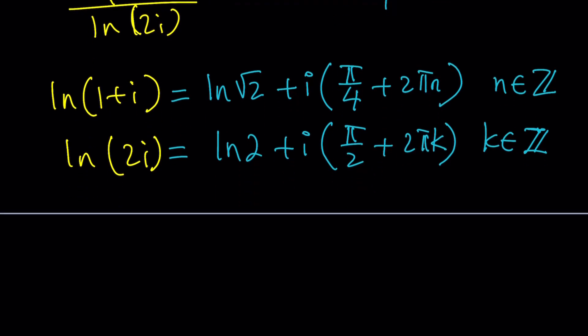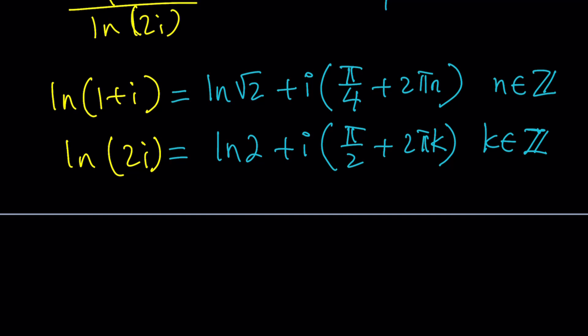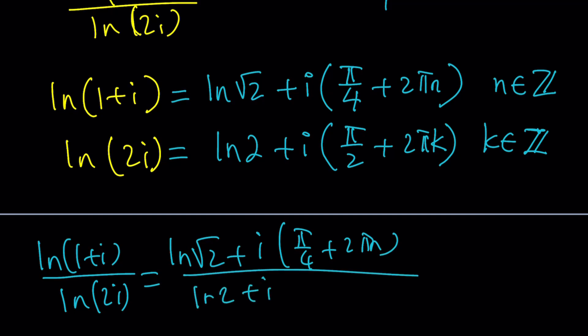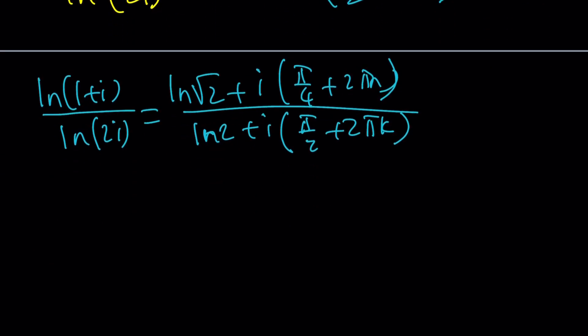Make sense? Because they are multi-valued, obviously, we kind of need to focus on the principal values. But anyways, let's go ahead and plug it in. And then our answer is going to be kind of like an interesting ratio of two complex numbers. ln root 2 plus i times pi over 4 plus 2 pi n divided by ln 2 plus i multiplied by pi over 2 plus 2 pi k.